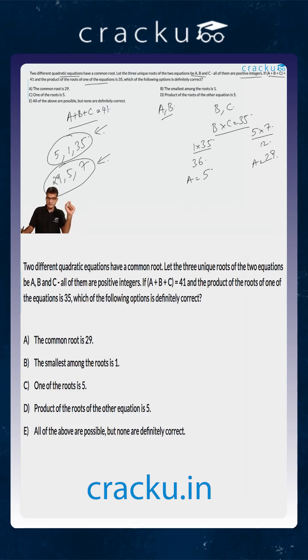Let's look at the five options to determine which is definitely correct. The first one says the common root is 29. This need not be correct because it's possible we're looking at the first case, in which 29 is not the common root or even a root of either equation. So this is not necessarily correct.